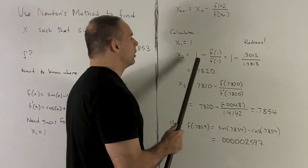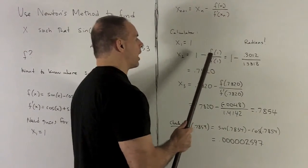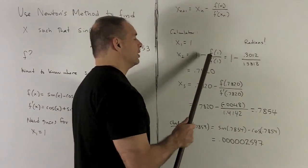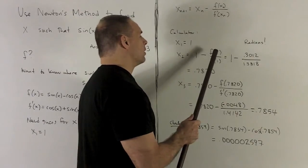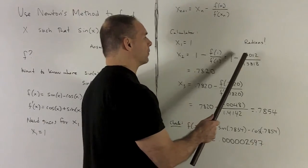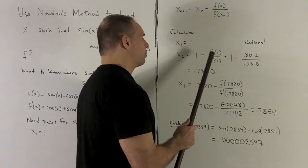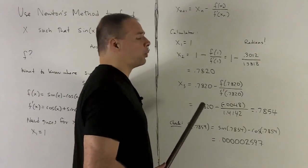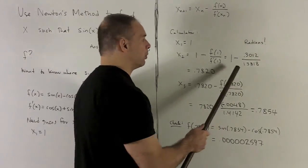Okay. My x2, 1 minus f of 1 over f prime of 1. We stick them in to our calculator for radians. So this is sine of 1 minus cosine of 1 gives you 0.3012. f prime of 1, which is going to be cosine 1 plus sine of 1 gives me 1.3818.